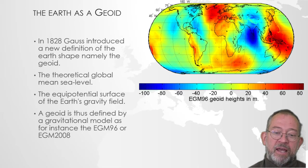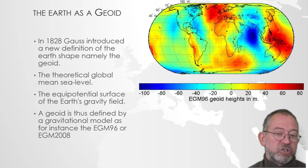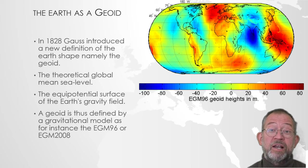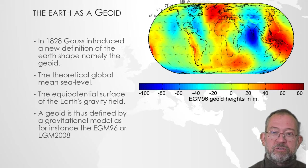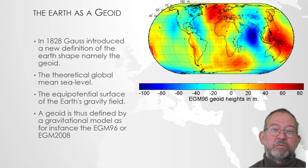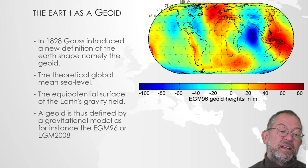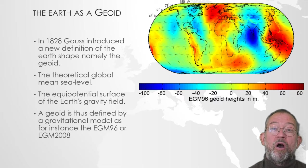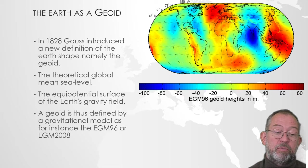On land, if we dug very small frictionless channels so that water could run freely through them without drawing from the oceans, that water surface would also be the geoid on land. More scientifically, we can say the geoid is an equipotential surface of the Earth's gravity field — a surface where we have a constant gravitational pull from the Earth.